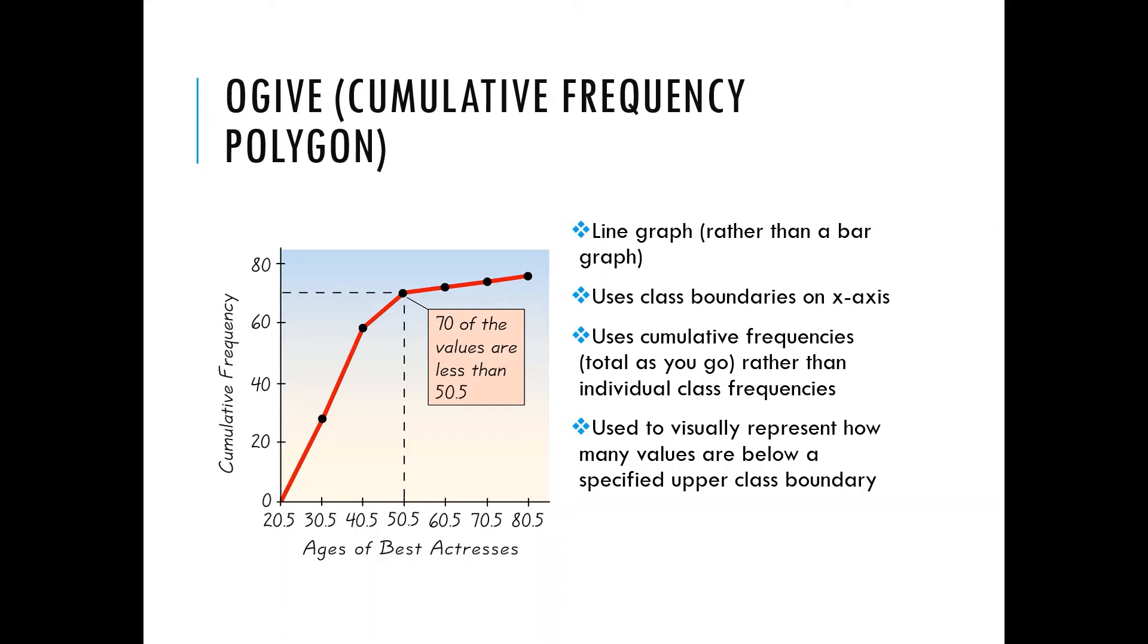So we just finished frequency polygons, and now ogives are another type of frequency polygon, except they're a cumulative frequency polygon. When we say they're like a frequency polygon, I'm basically saying that they're a line graph. So ogives are another kind of line graph, except they have this word called cumulative in there. So we're going to figure out what that means.